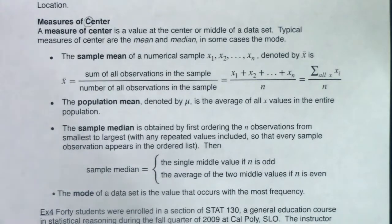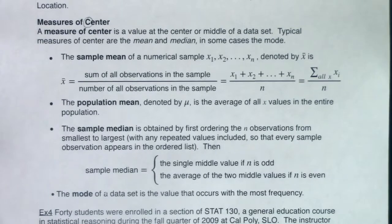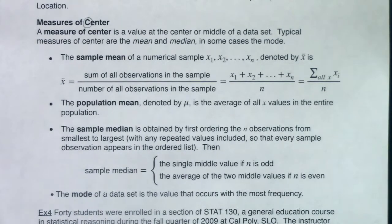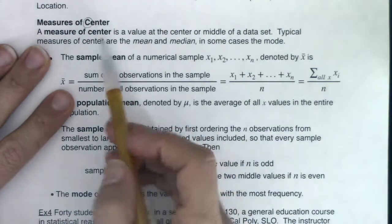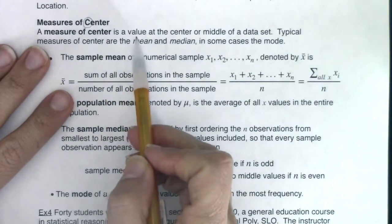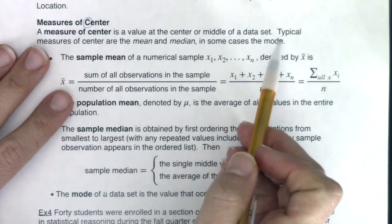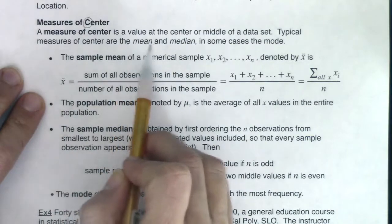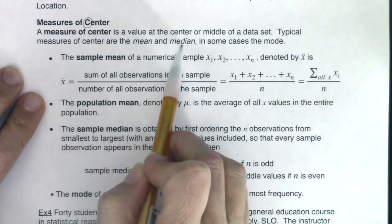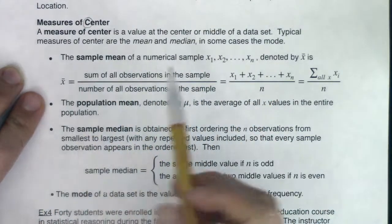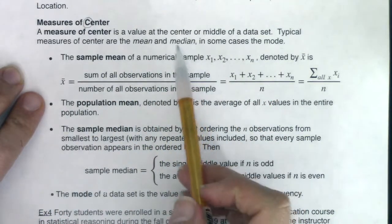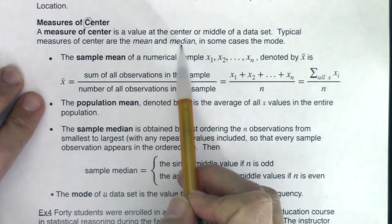You could actually go back to examples 1, 2, and 3 and find the center and answer that part of your write-up. So a measure of center is a value in the center or in the middle of the data set. Typical measures of center are the mean and median, and in some cases, the mode. By far, the two most common are the mean and the median.